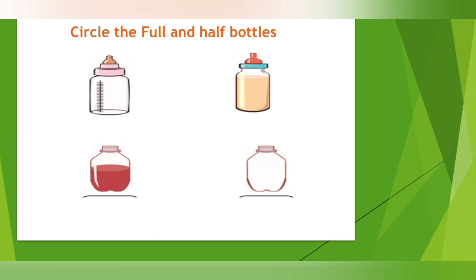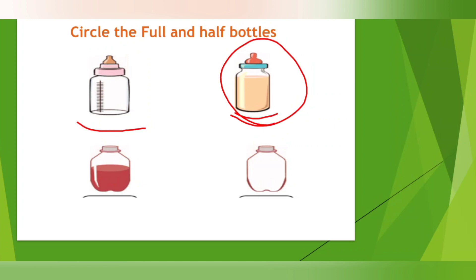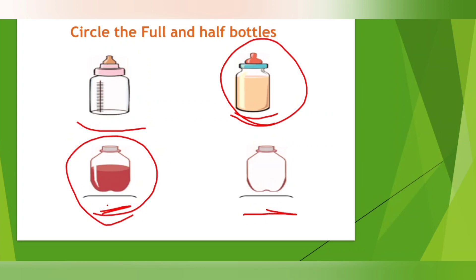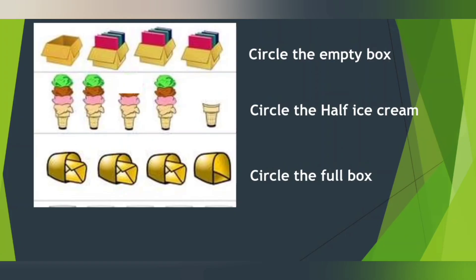Now this activity is: circle the full and half bottles. The first bottle — it is empty, nothing is there in the bottle. The second one is having full of milk, so it is full. The third one is not empty and not full — it is half. And the fourth one, nothing is there, so it is empty.